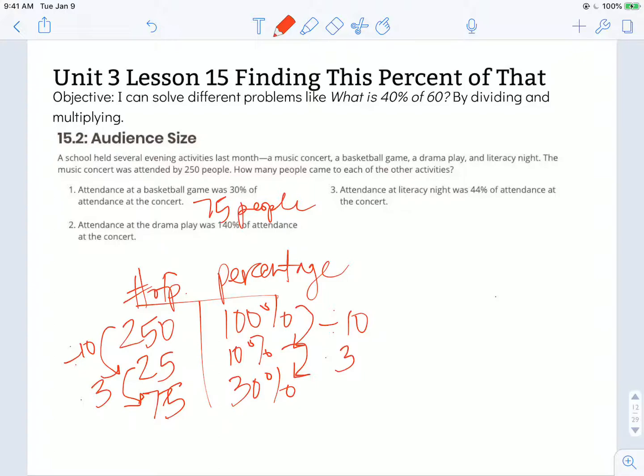Attendance at a literacy night was 44% of attendance at the concert. So I could take what I have here in my table, and I could try to figure out how can I get to 44%. And one way that I can get to 44% is if I know the value of 1%. So if 10% is 25, then to get to 1%, I'm going to divide by 10 again. That would be 2.5 people. Now to go from 1% to 44%, I can multiply that by 44. So I can take 2.5 people and multiply by 44.